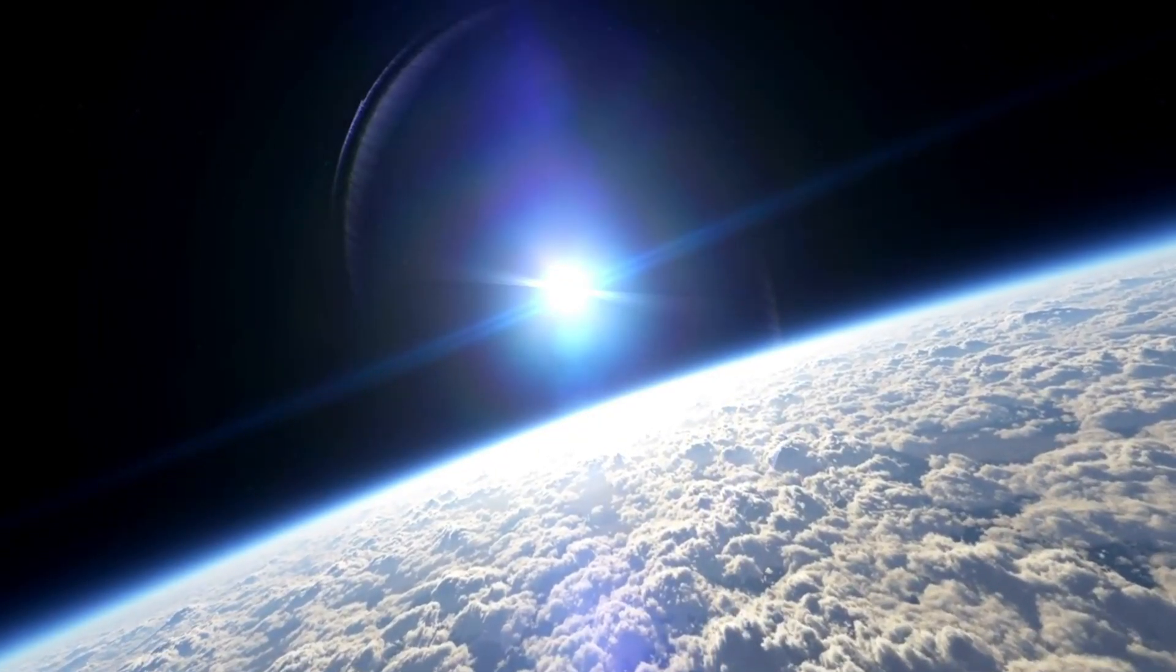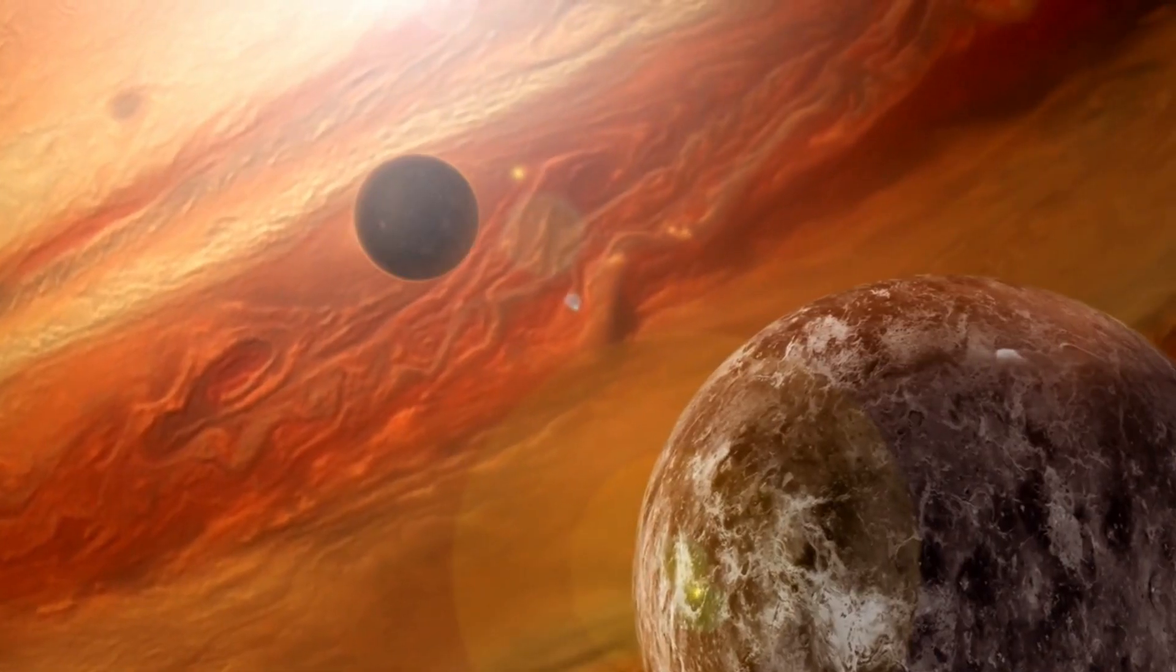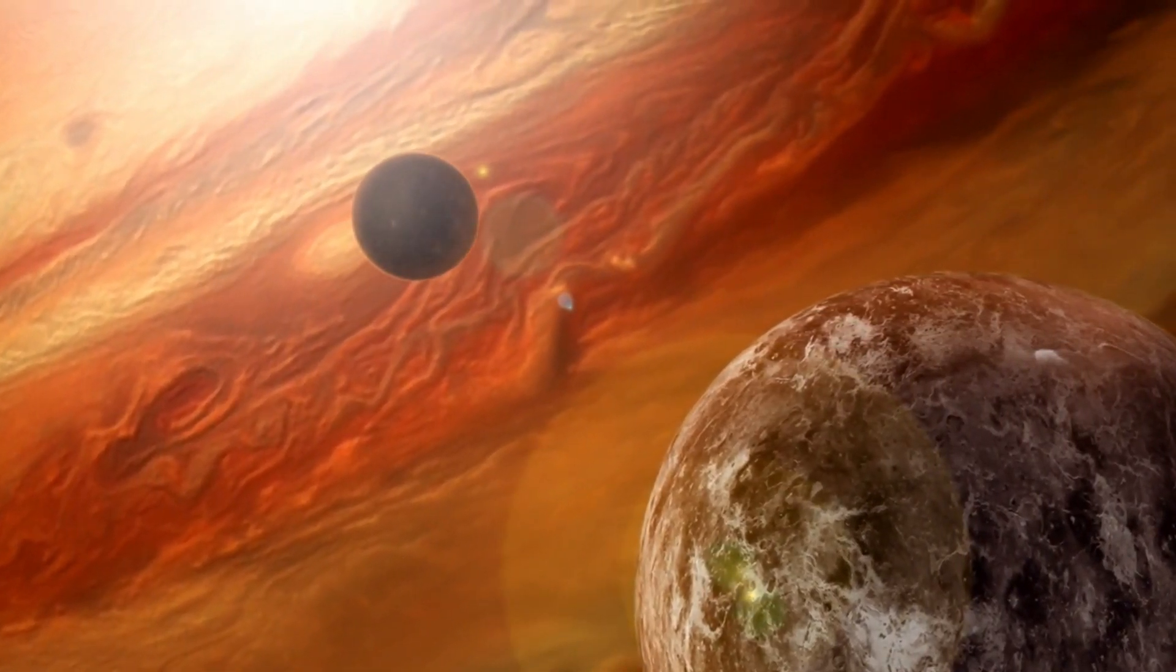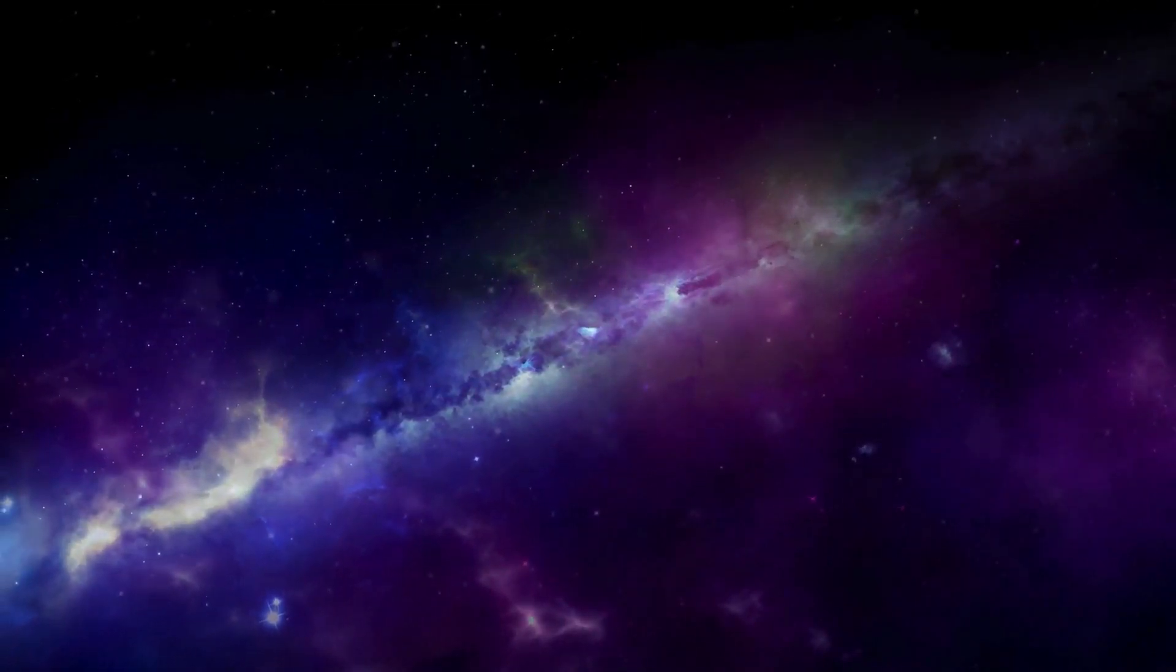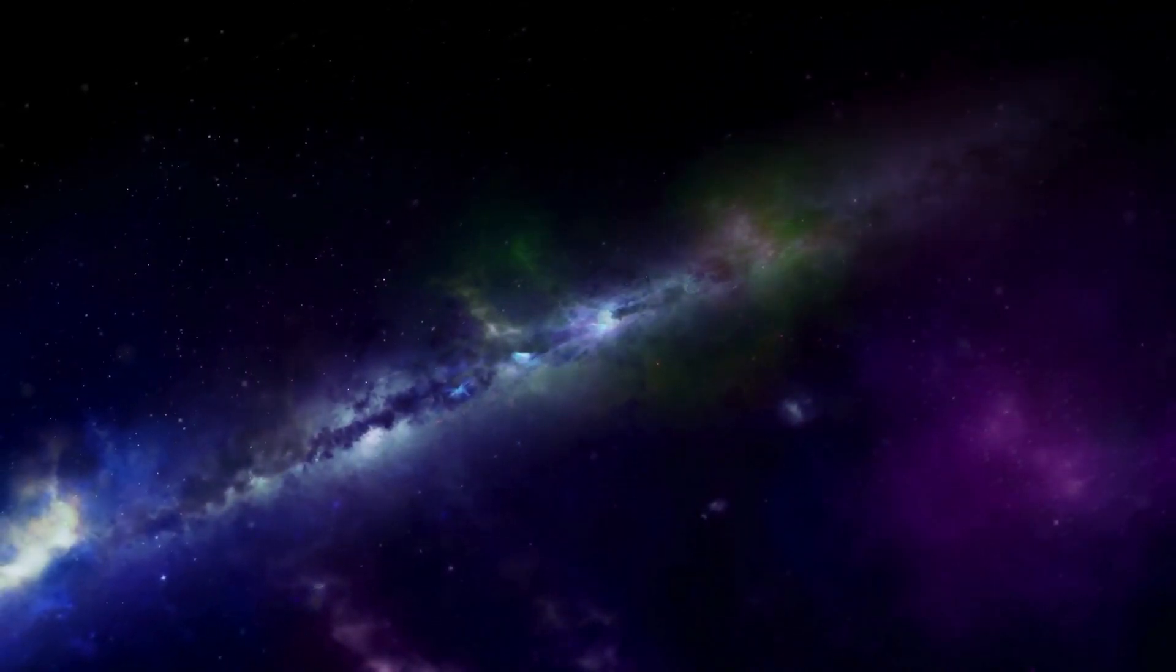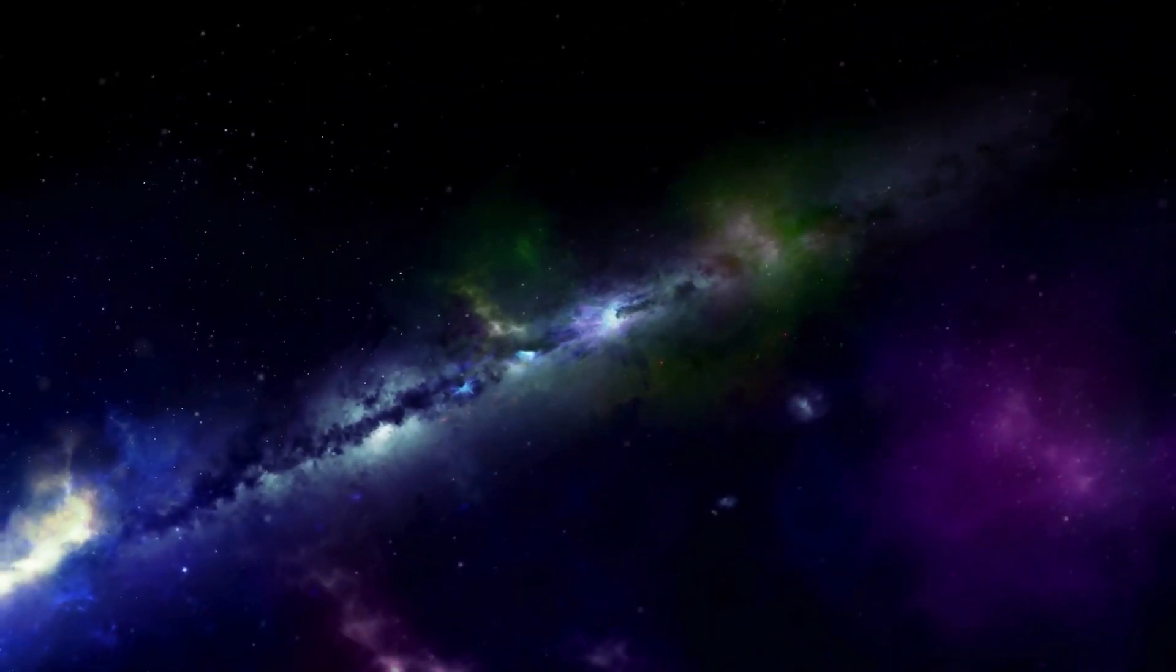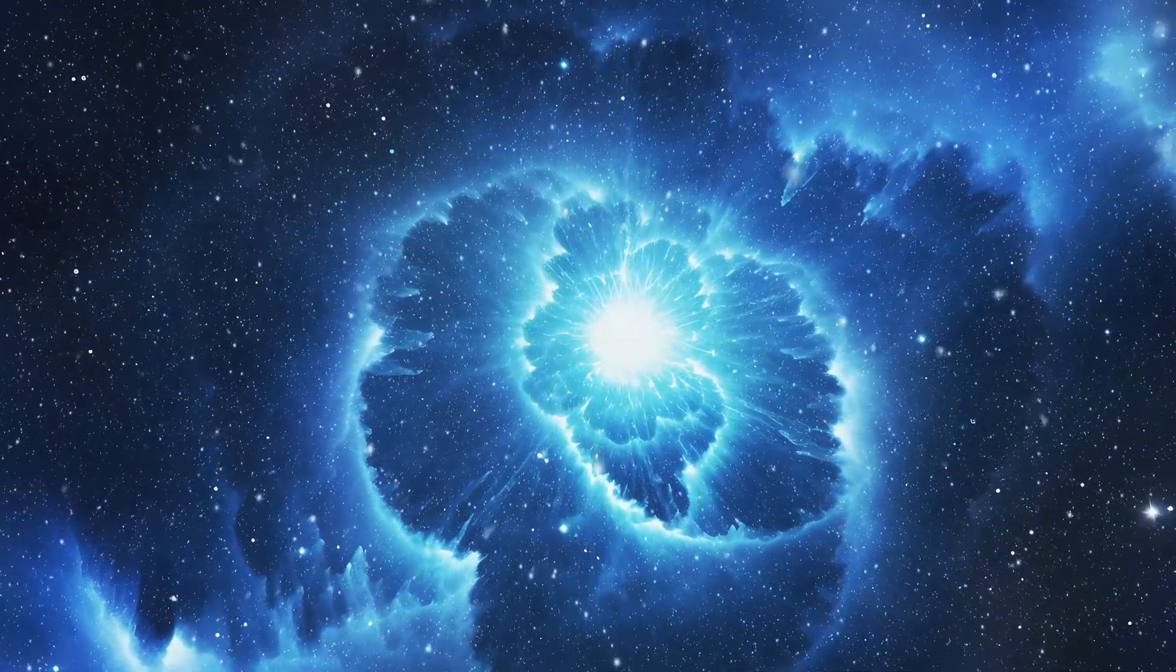However, the TRAPPIST-1 planets are beyond our current reach, located a staggering 235 trillion miles away. They orbit a star much smaller and redder than our Sun, known as an M-Dwarf star. These stars are far more common in the Milky Way than Sun-like stars and are ideal targets for planet hunters. However, M-Dwarfs are also more prone to flaring and sending high-energy radiation, which could be damaging to emerging extraterrestrial life or a planet's atmosphere.